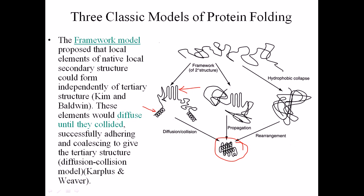These regional secondary structures diffuse until they coalesce, and through this diffusion process, they finally form the coiled tertiary structure.